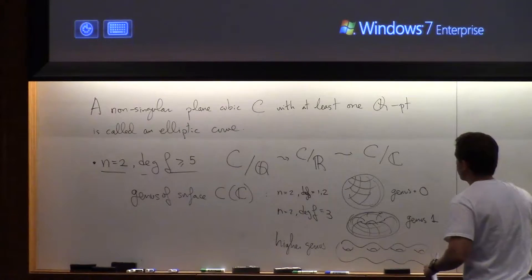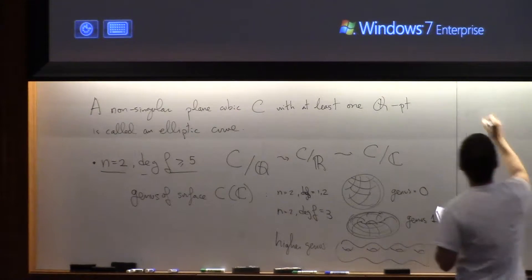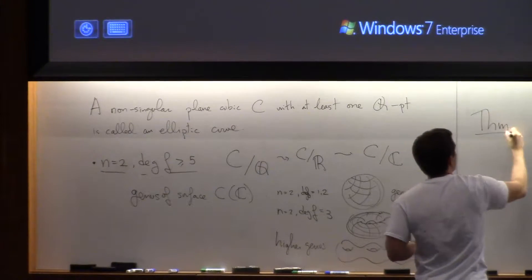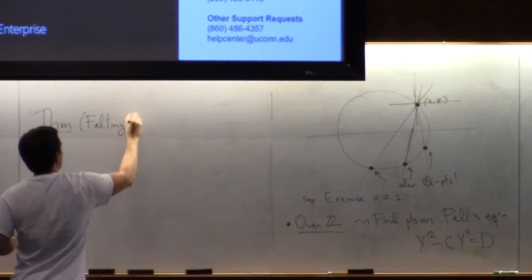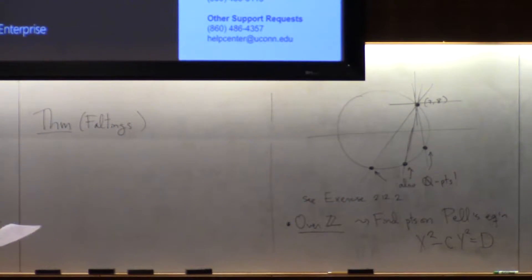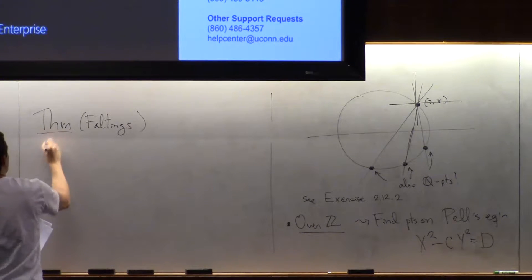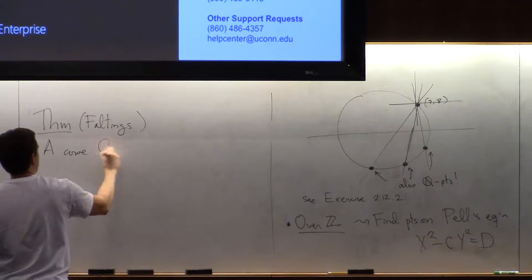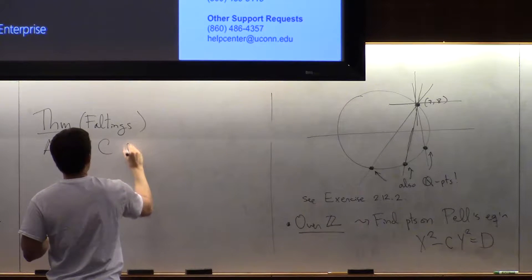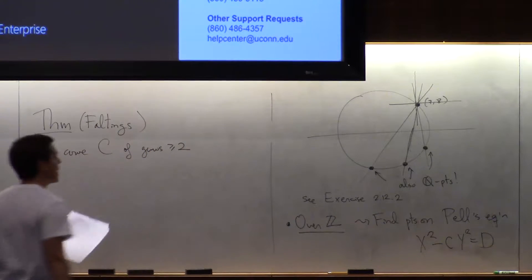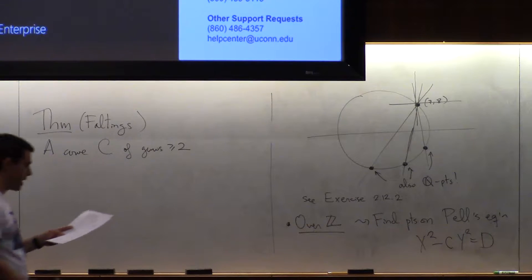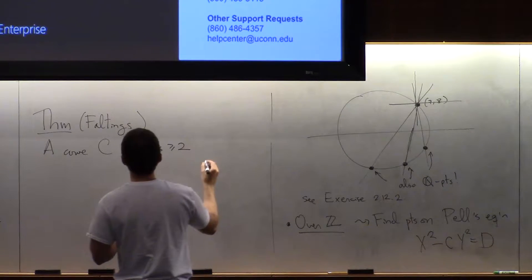So what happens when you have more than one hole? There's a theorem of Faltings that says that if your curve, if you have at least two holes, then you must have only finitely many points.